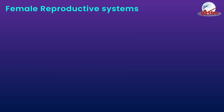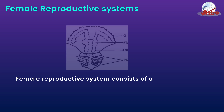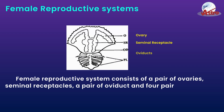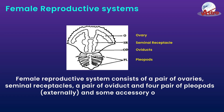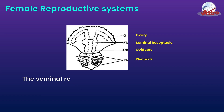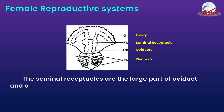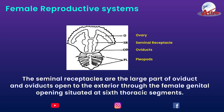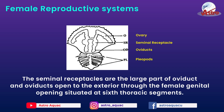Female Reproductive System: The female reproductive system consists of a pair of ovaries, seminal receptacles, a pair of oviducts, four pairs of pleopods, and some accessory organs. The seminal receptacles are the large part of the oviduct, and the oviducts open to the exterior through the female genital opening situated at the sixth thoracic segment.